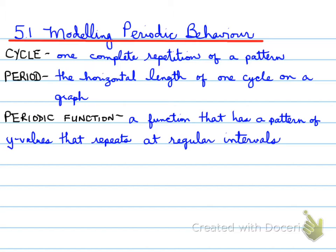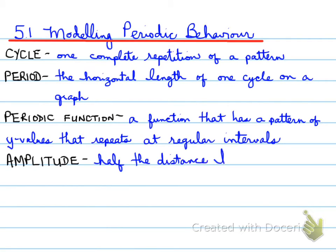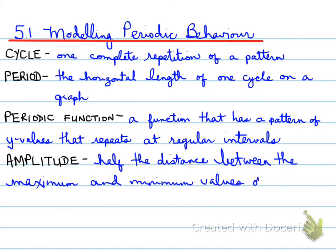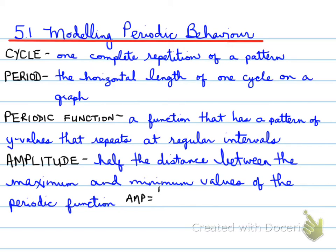We're going to see some examples of periodic functions in the next slides. Amplitude is the measure of half the distance between the maximum and minimum values of the periodic function. The formula is: amplitude equals the max minus the min, divided by 2.